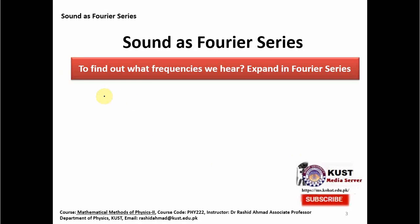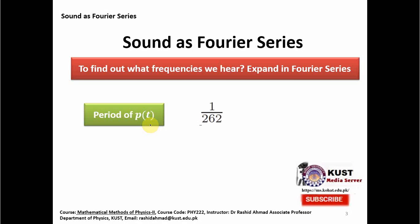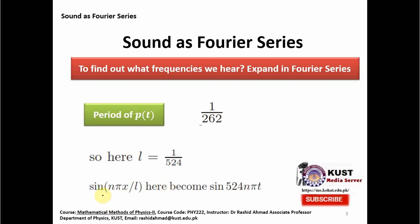The next thing is to find out what frequencies we hear. From this sketch we want to expand P(t) in a Fourier series. The period of P(t) is 1/262, as evident from the sketch, and L is therefore equal to 1/524. We have sine functions of the form sine(n·π·x/L), which becomes sine(524·n·π·t). These are the harmonics, so we will expand P(t) in terms of sines with this period.